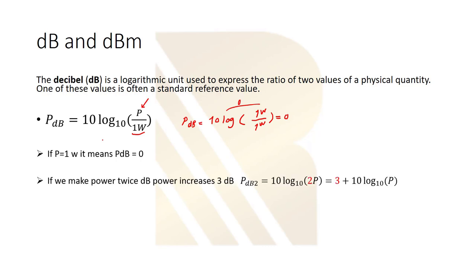There's another feature with dB. If we make power twice, dB power increases 3 dB. For example, we have 1 watt. Now let's say we have 2 watt. For 2 watt, we just have to say 3 plus P_dB for 1 watt, because it's twice. And this value is 0, so it will become 3.